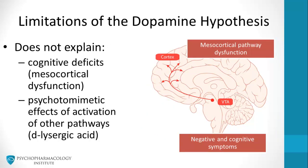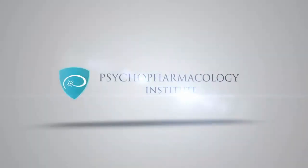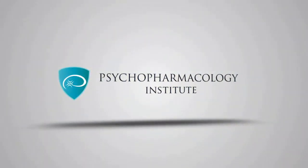Schizophrenia neurobiology is very complex and the dopamine theory has limitations. The first limitation is that it doesn't explain cognitive deficits in schizophrenia patients. The second limitation is that psychotomimetic effects of activation of other pathways are not included in this theory. For example, lysergic acid is a 5-HT2 agonist that can produce psychotic symptoms.